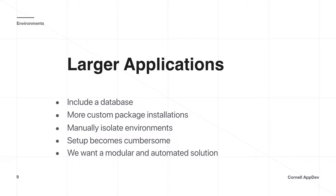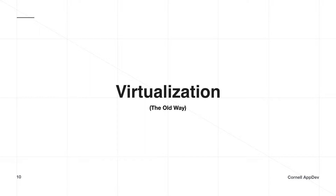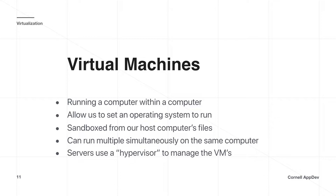In the name of modularization and automation, the older approach was virtualization — using virtual machines. A virtual machine simulates a computer running on your own computer. For Windows users, you actually need to create a virtual machine of a Linux distribution to use Docker. Virtual machines set up a totally separate operating system running in parallel, completely sandboxed from your host files. Servers use something called a hypervisor to manage multiple VMs running simultaneously.